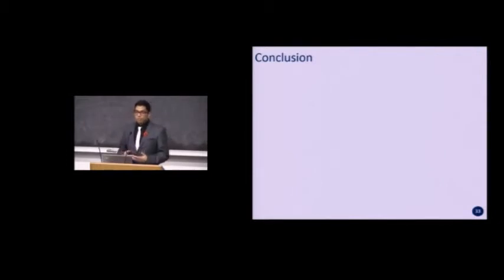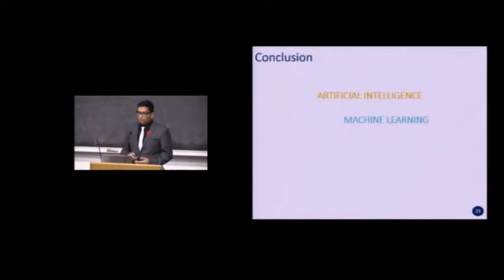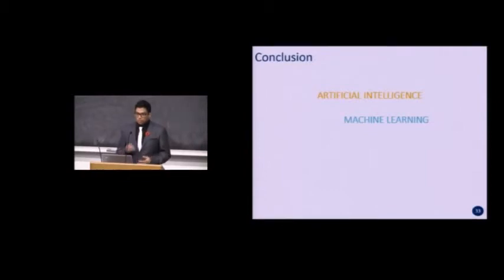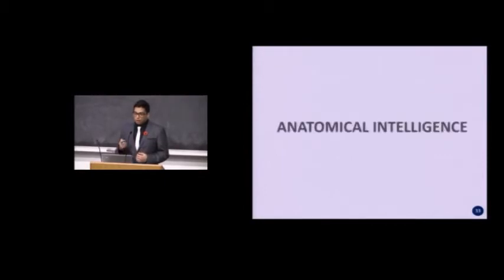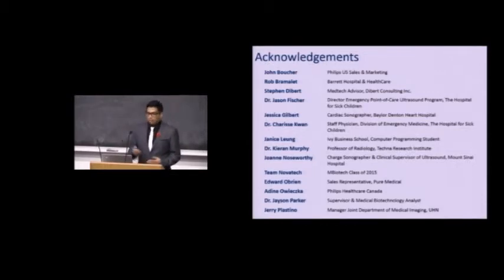In conclusion: artificial intelligence is a burgeoning field that will be very important in the near future. It can be divided into many different subsections — most relevant to this talk is machine learning, which can be subdivided into unsupervised learning and supervised learning. Supervised learning can be done using pattern recognition, which itself has many different applications including medical imaging. The answer to how AI can be adapted in a commercial setting to generate profit is anatomical intelligence. Thank you, and a few acknowledgements to the individuals who helped us.